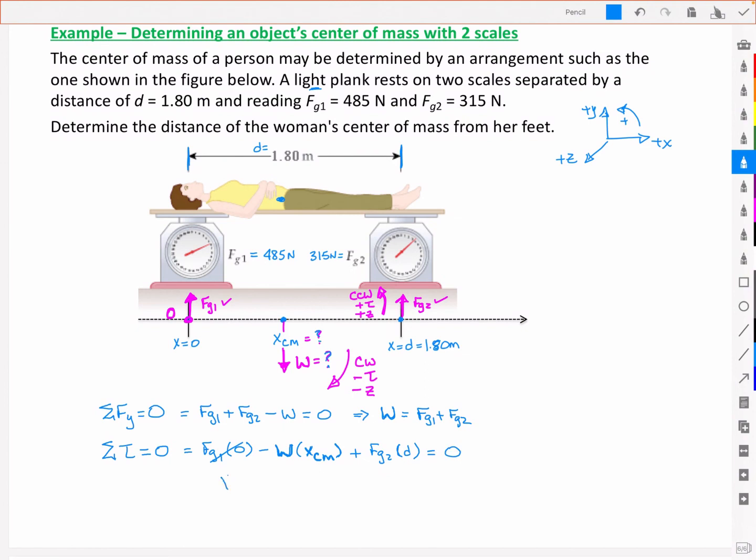Solving for my center of mass, the distance of my center of mass, I end up with a final distance for my center of mass being located at 0.709 meters. So not the halfway point which would be 90 centimeters, but more like 70 centimeters.